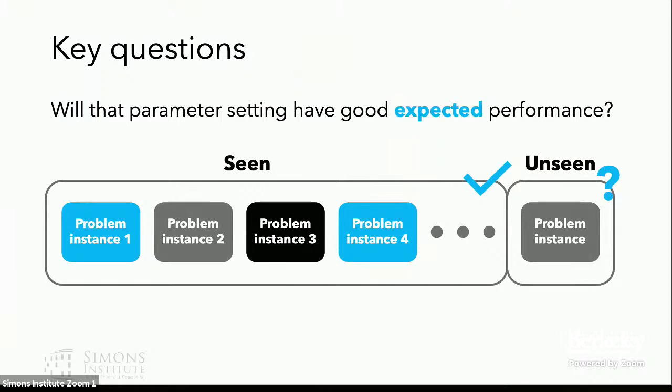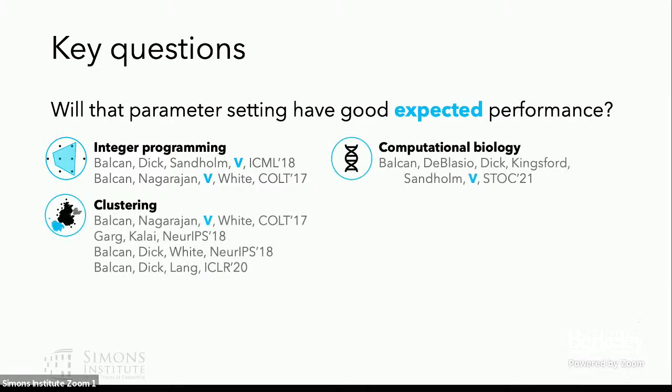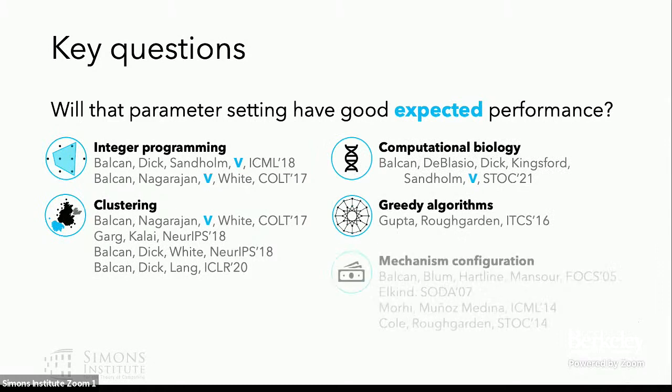Second, no matter what parameter setting I come up with, can I somehow guarantee that that parameter setting will also have good expected performance on future problems from the same application, but which aren't already in my training set? So here, expected performance is really a proxy for future performance on future problems that I'll encounter. And this topic we've also studied pretty extensively over the past few years in many different contexts, including integer programming, clustering, computational biology, greedy algorithms, and designing algorithms for economic context or mechanism configuration.